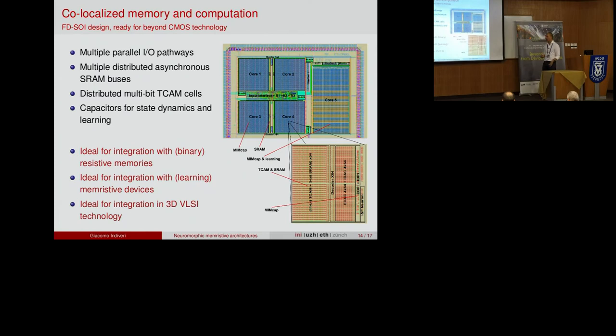We only move data just next to the neuron so we can do processing — that's how we get low power. Also worth pointing out: if we were to replace these TCAM and SRAM cells with memristive devices, we could increase the density by at least a factor of ten, because these are six-transistor cells and if you replace each with one nanoscale device you really shrink things down. This technology, even though it uses standard CMOS circuits, is ideal for integration with resistive memories, memristive synapse circuits for non-volatility and learning, and for 3D VLSI integration — you can have capacitors on a second layer using monolithic 3D technology being developed at places like LETI.